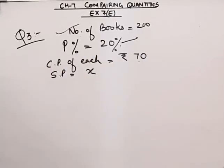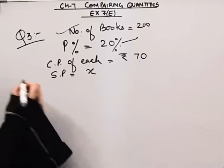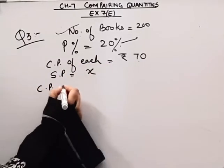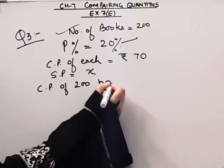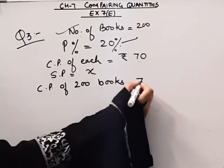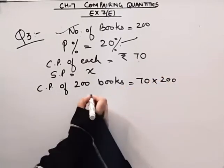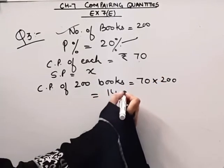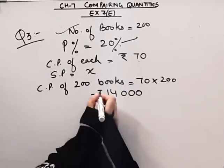We have to find out the total selling price. The cost price of each book is 70 rupees, so the cost price of 200 books will be 70 into 200, which equals 14,000 rupees.